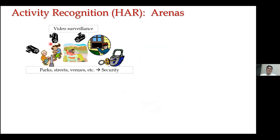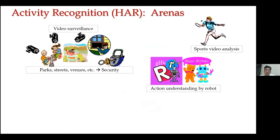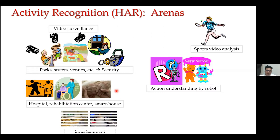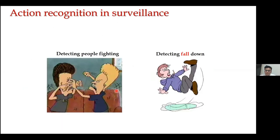Applications include video surveillance, sports analysis, action understanding by robots — just today one of our papers was accepted at a relatively good conference on robot-based therapy for autistic children, which I'll show later — as well as hospital and rehabilitation centers, smart houses, and entertainment.